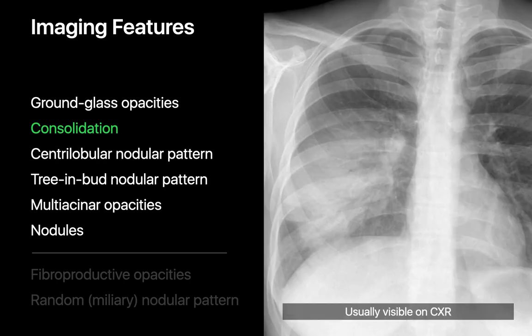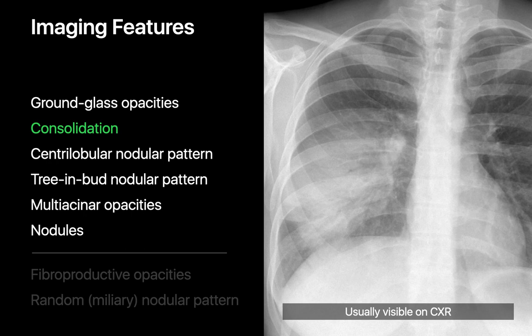Unlike ground glass opacities, consolidation is usually visible on a chest radiograph. Sometimes consolidation can cavitate, resulting in a region of internal lucency, and if fluid is introduced into the cavity, an air-fluid level may be apparent.